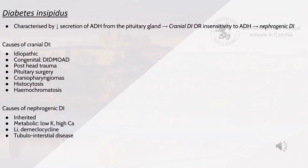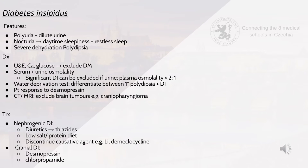Causes of nephrogenic DI include inherited causes; metabolic causes such as low potassium and high calcium; lithium, which desensitises the kidneys' ability to respond to ADH in the collecting ducts; and tubular interstitial disease such as obstruction, sickle cell disease or pyelonephritis. Common features are polyuria and dilute urine, nocturia with daytime sleepiness and restless sleep, and severe dehydration leading to altered mental status, seizures, lethargy and coma.